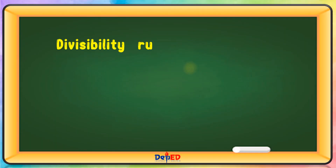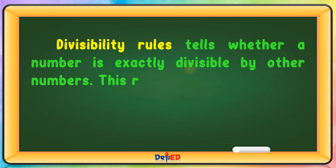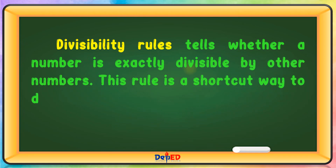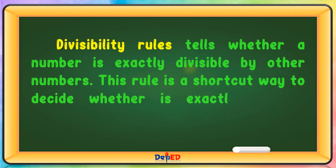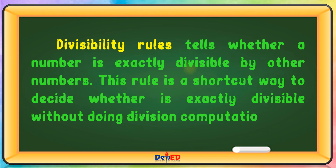Divisibility rules tell whether a number is exactly divisible by other numbers. This rule is a shortcut way to decide whether it's exactly divisible without doing division computation.